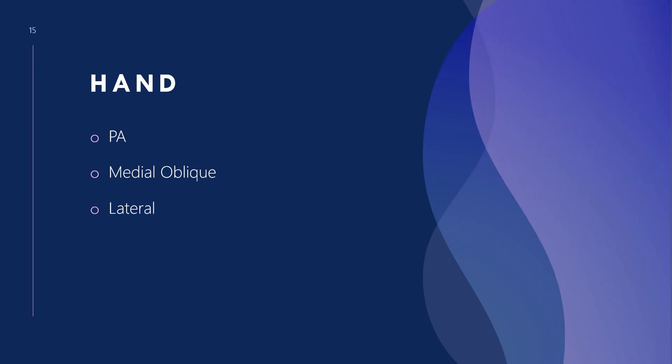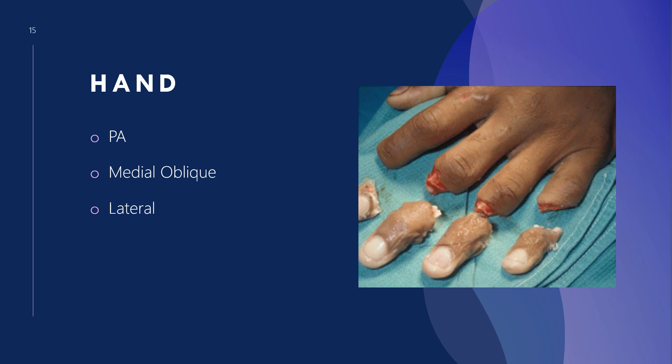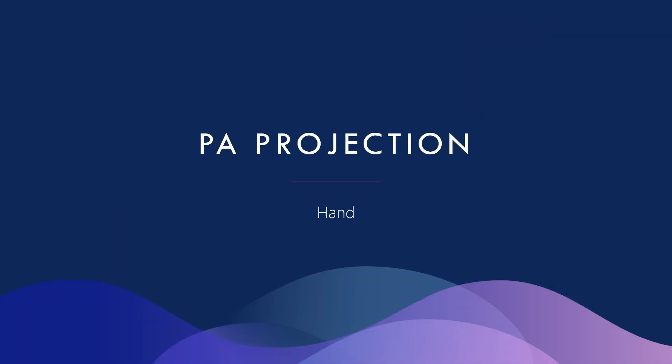Warning — I like to use graphic photos. This is an image of some digits that were cut off, showing PA, medial oblique, and lateral views. We'll discuss how we x-ray amputated digits in a little while.